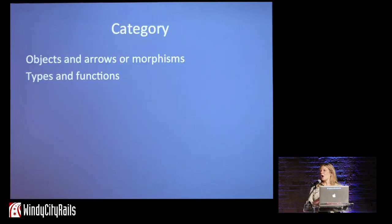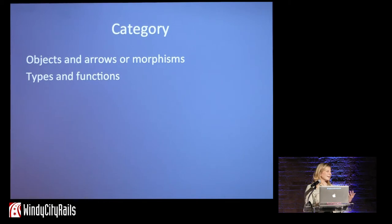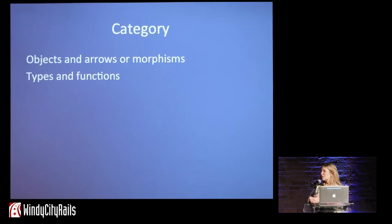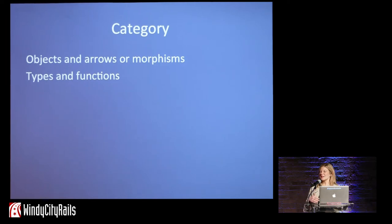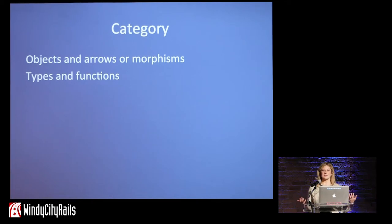This all comes from a branch of mathematics called category theory. What's a category? A category is just objects and arrows. Arrows are also called morphisms. Morphisms are also called functions — things you can do. So objects and things they can do: types and functions — programming languages.